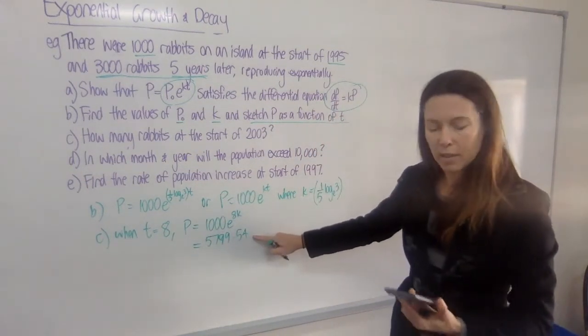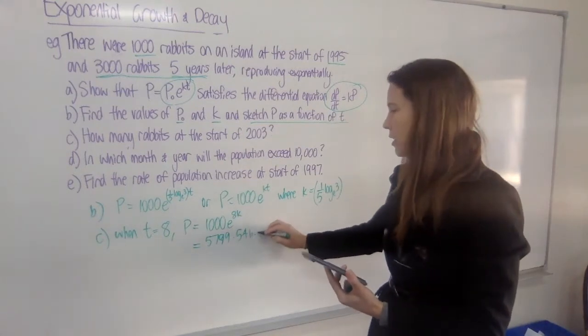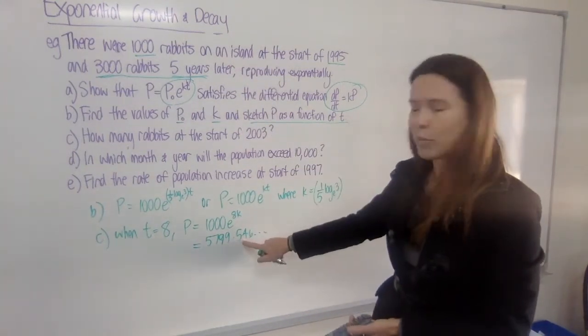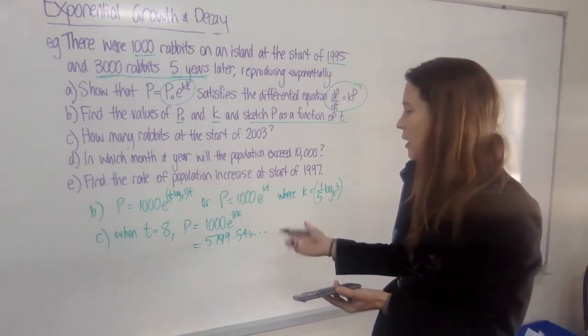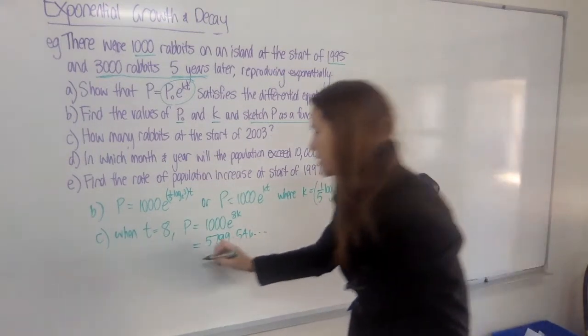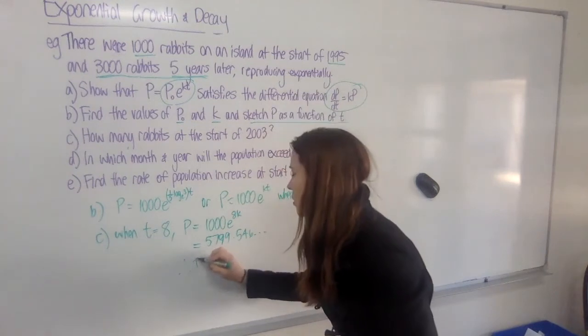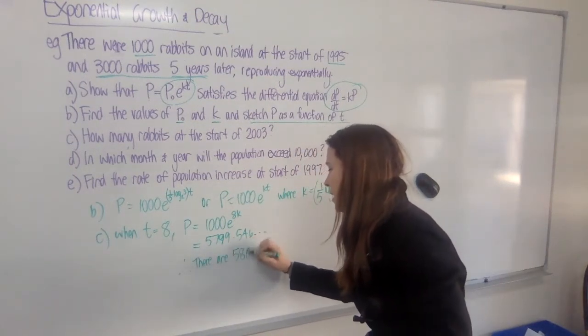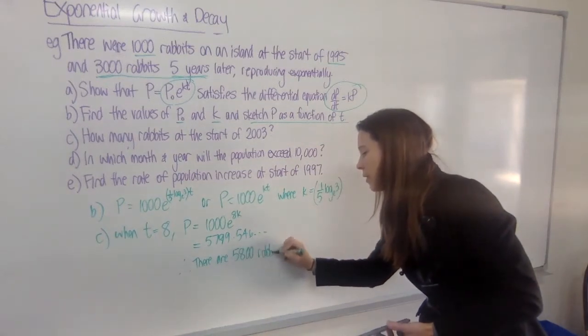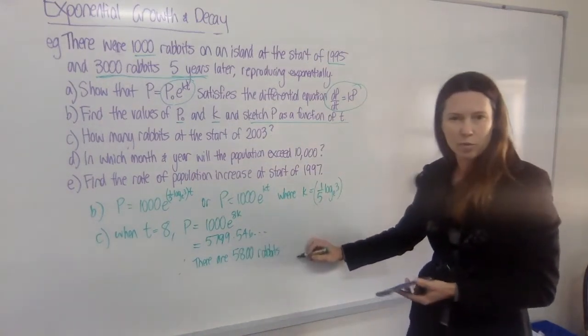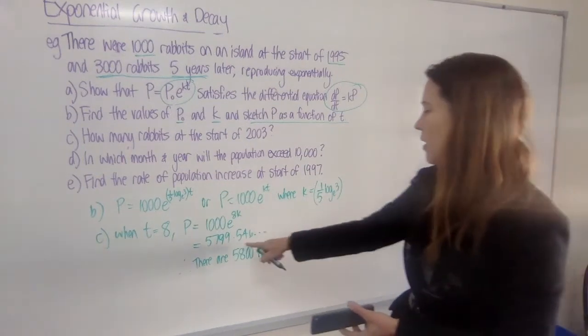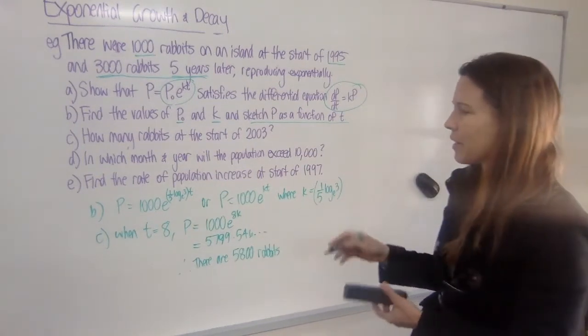Now always relate back to what this means. This goes on and on, 546, blah, blah, blah. We're talking about rabbits here. We can't have 0.546 of a rabbit. So to the nearest rabbit, let's round this up. Therefore, there are, let's say 5,800 rabbits. And if you want to write that you've put to the nearest rabbit, that's fine. But just make sure your answer makes sense. You don't want to have a part of a rabbit because that won't make any sense at all.